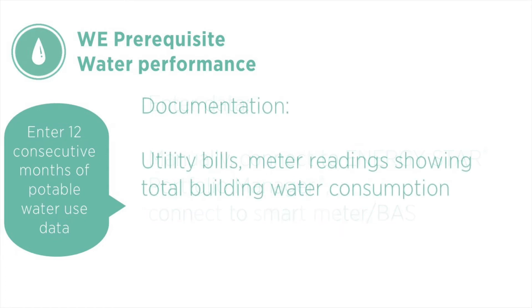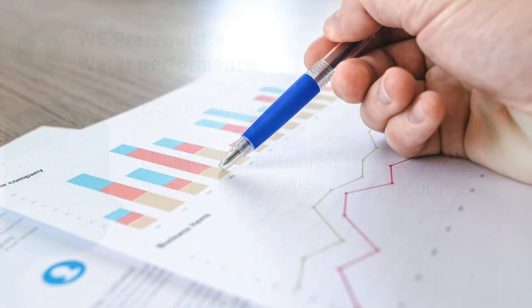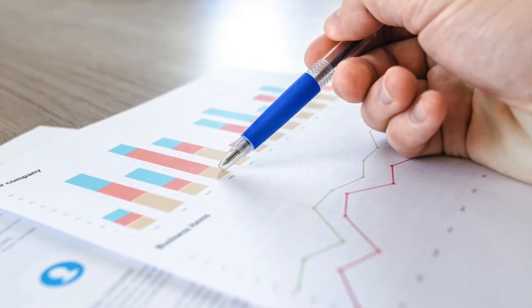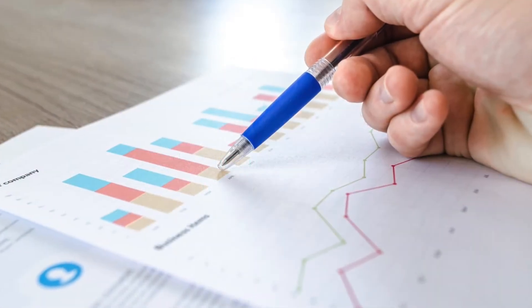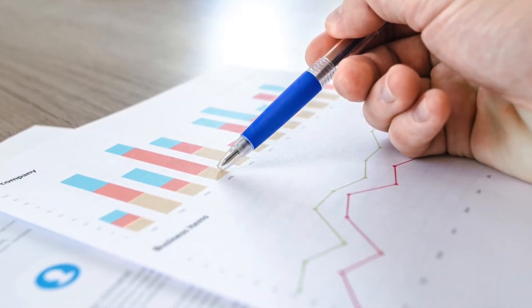In addition to the water use data, projects must also provide documentation in the form of utility bills or meter readings for annual review. These bills must show total building consumption, including irrigation and outdoor water use.